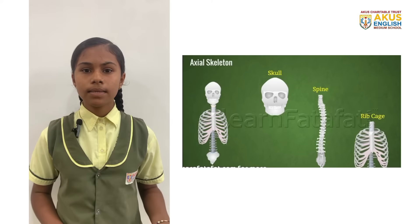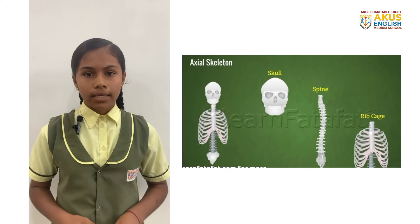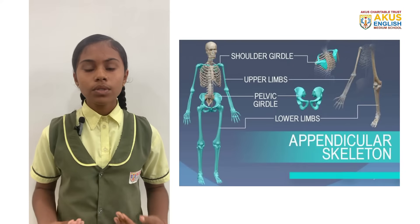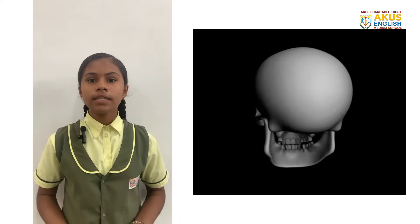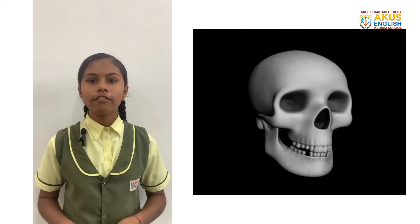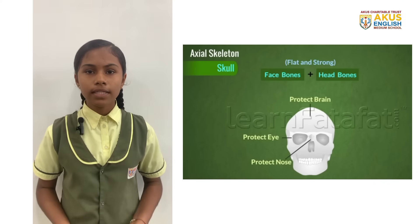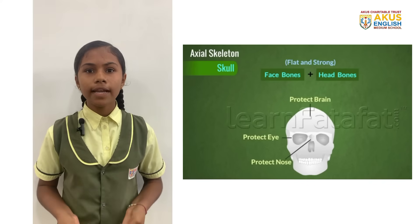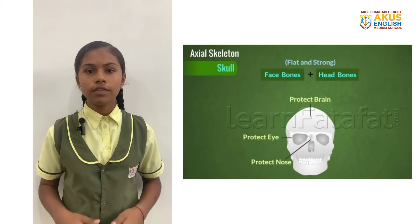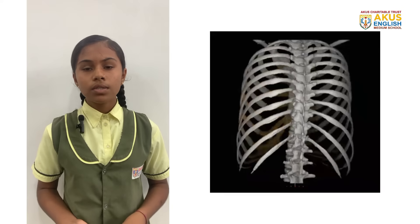The axial skeletal system consists of the skull, the ribcage and the spine at the back. The skull is formed by the bones of the head and face. The bones of the skull are flat and strong. There are altogether 22 bones in the skull: 8 bones in the head and 14 bones in the face. Except for the lower jaw, none of the bones of the skull can move.